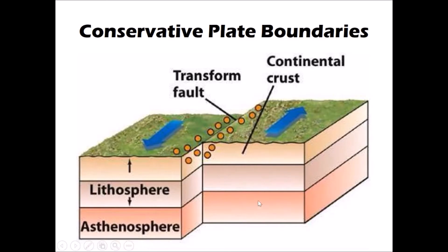You can see on this diagram that we have two bits of lithosphere sliding side by side. The movement at a conservative plate boundary is a parallel movement where the plates are either moving in the same direction at different speeds, or moving in opposite directions. In this example, one plate is moving in one direction and the other plate in the opposite direction.